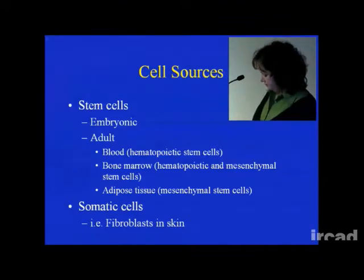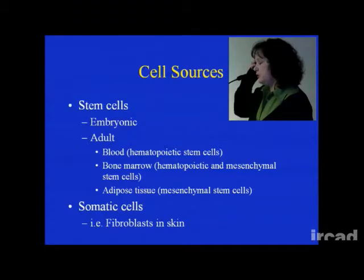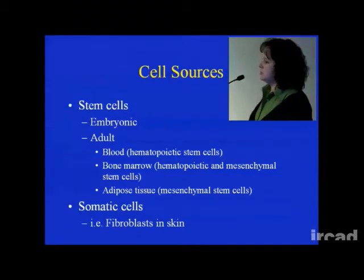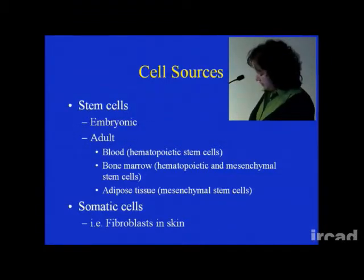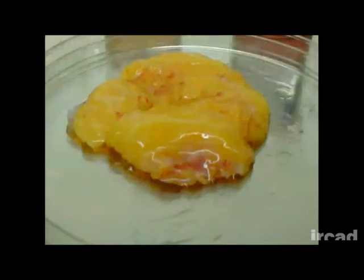For the regrowth of tissue such as fat, bone, cartilage, and muscle — which tissue engineers tend to focus on — a more suitable source are the mesenchymal stem cells. This is our cell source.